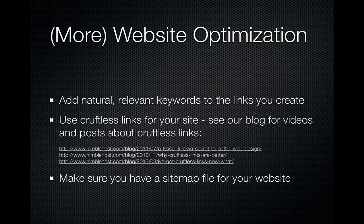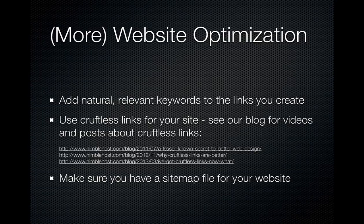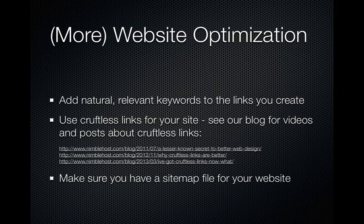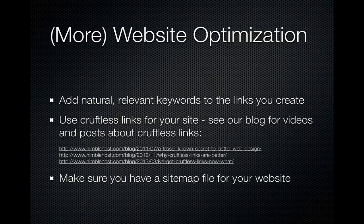There are other things you can do to optimize your website. You can add natural, relevant keywords to the links you create — so instead of just saying 'click here' or 'go here,' you add keywords that give your visitors a sense of where they're going. We also recommend cruffless links for your websites. We've talked about this in depth over the past couple of years, and we've got a lot of blog posts and videos on our website about cruffless links and how awesome they are. And of course, you want to make sure that you have a sitemap file for your website.